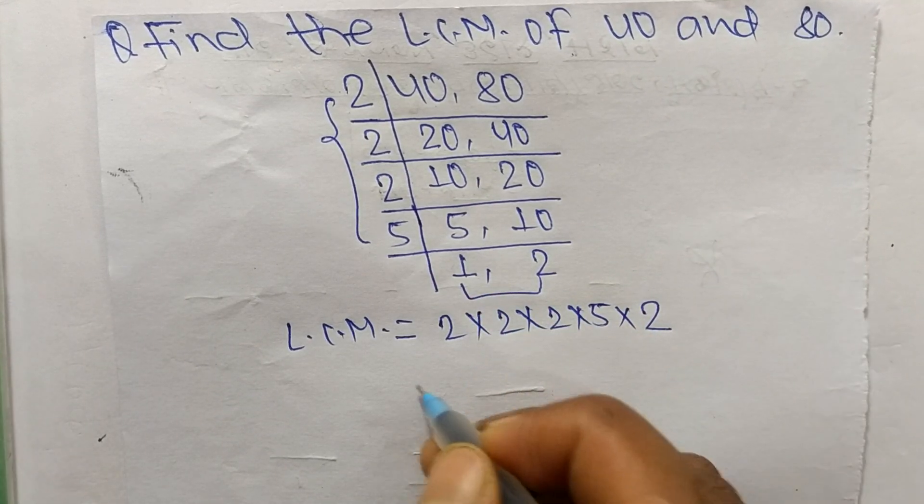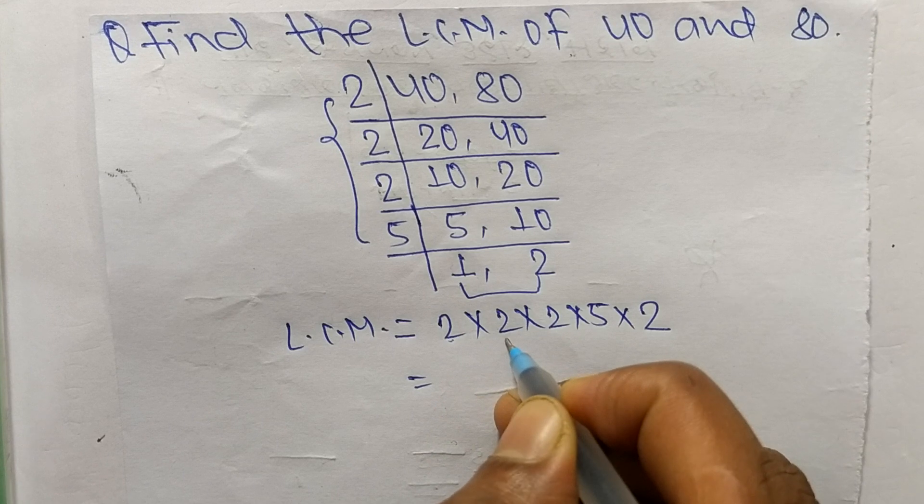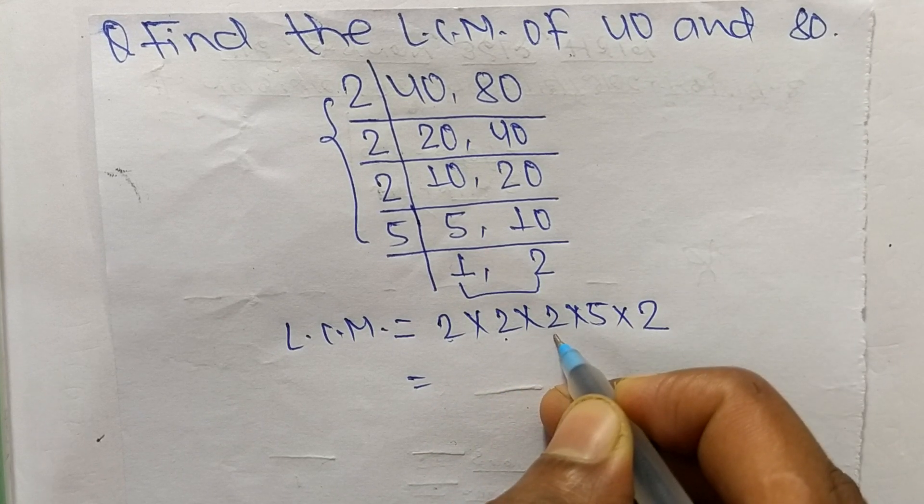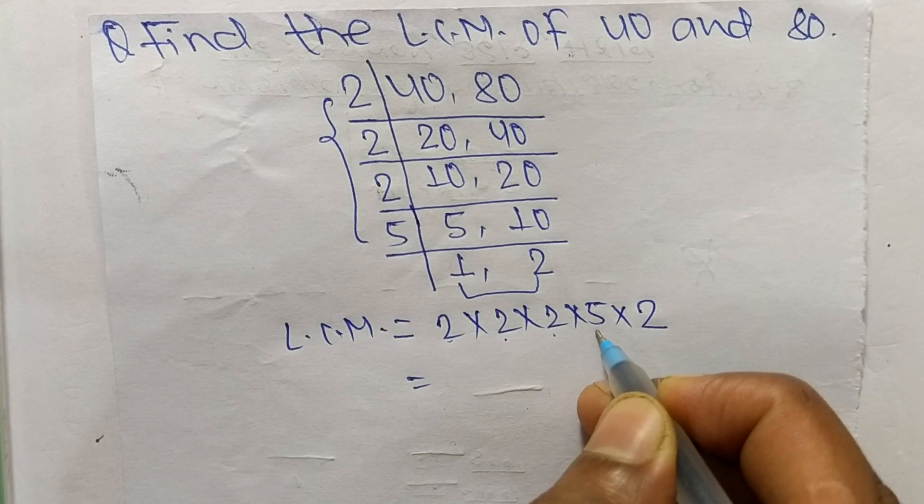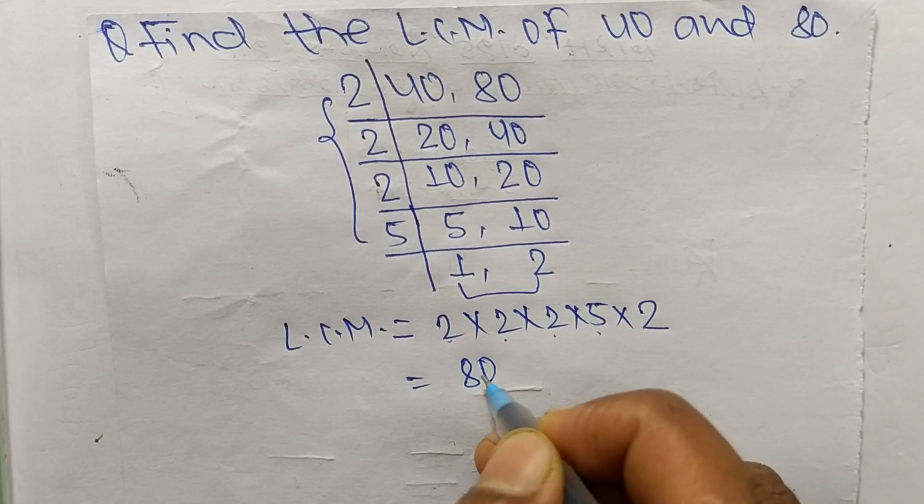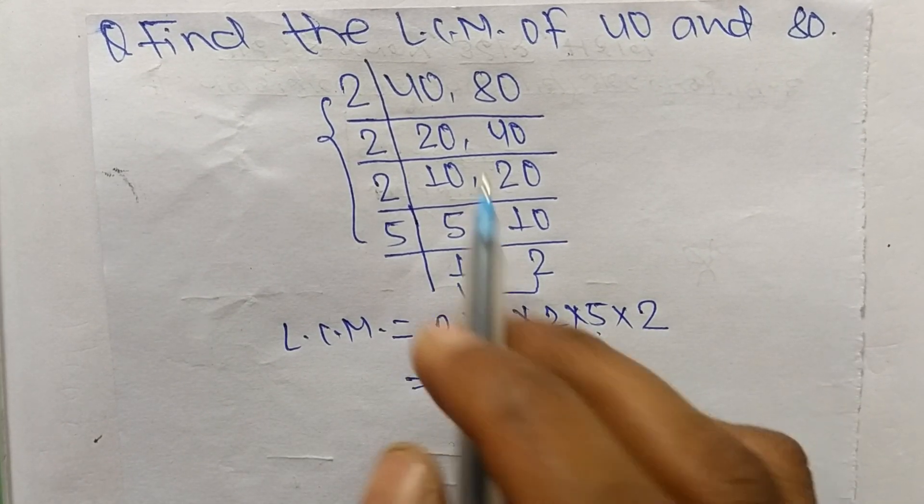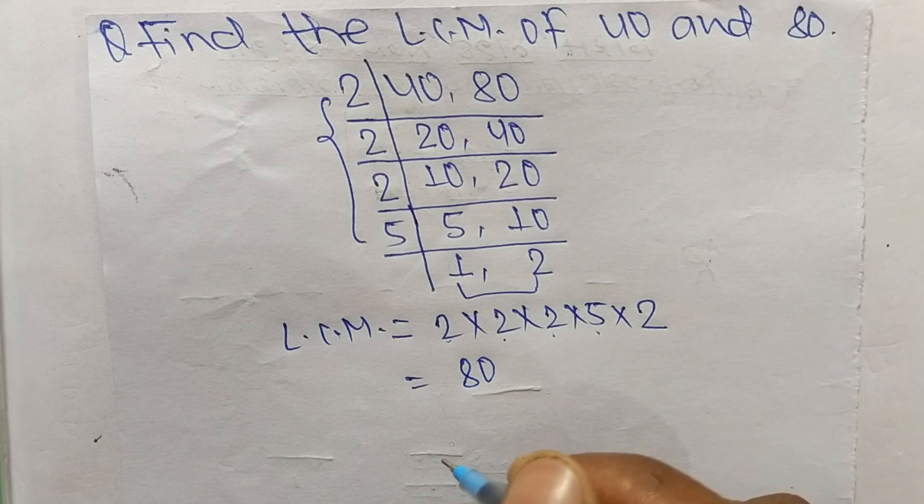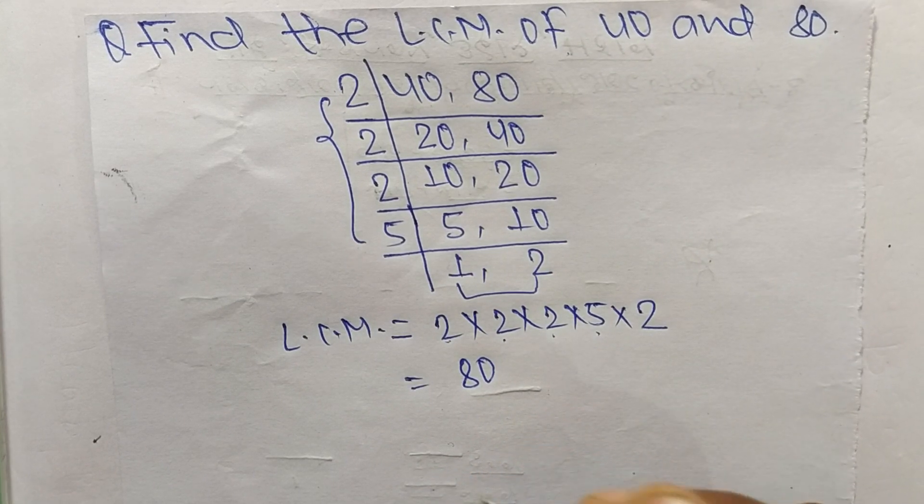So 2 times 2 mean 4, times 2 is 8, times 5 is 40, times 2 mean it is 80. So 80 is the LCM of 40 and 80. So this much for today and thanks for watching.